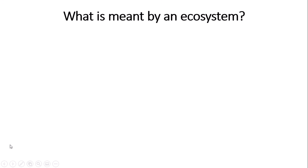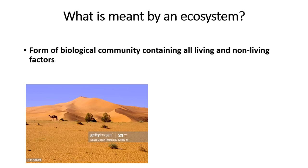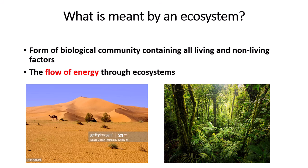So what do we mean by an ecosystem? By an ecosystem we mean a form of a biological community containing all living and non-living factors. Examples of an ecosystem can be a desert or maybe even a tropical rainforest. For this video we're mainly focusing on the flow of energy through ecosystems, so mainly through food chains for example.